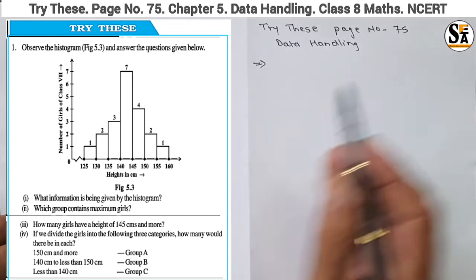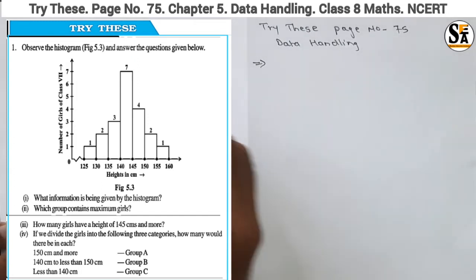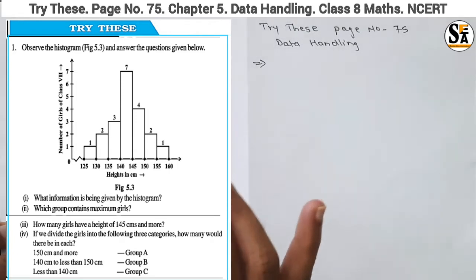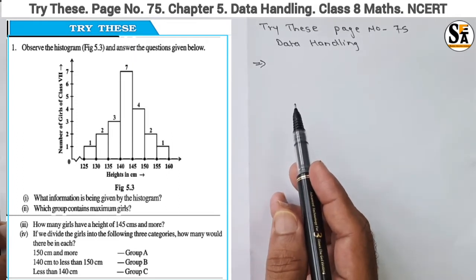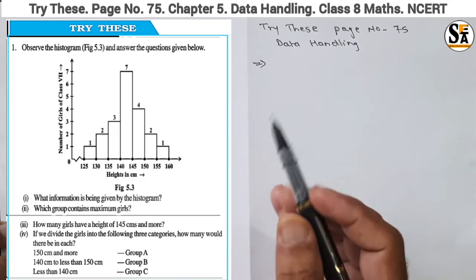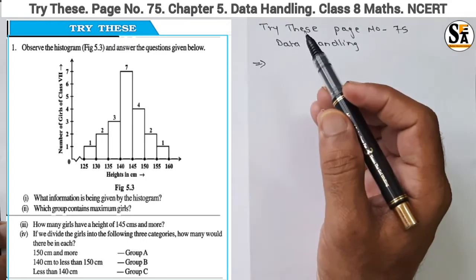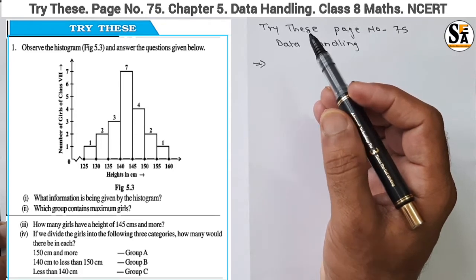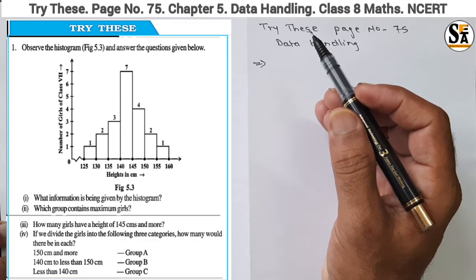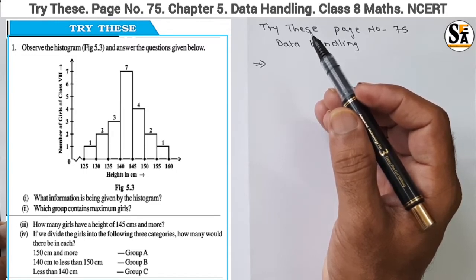In this chapter on Data Handling, a figure is given — a histogram. We have to answer questions related to this histogram. A histogram is a bar graph, but it has class intervals and each class interval has an equal width. Also, there is no gap between any class interval. This type of bar graph is called a histogram.